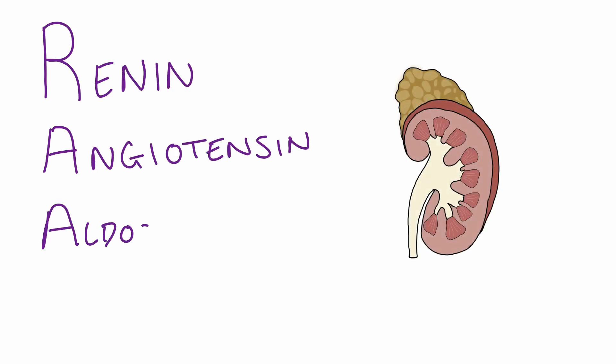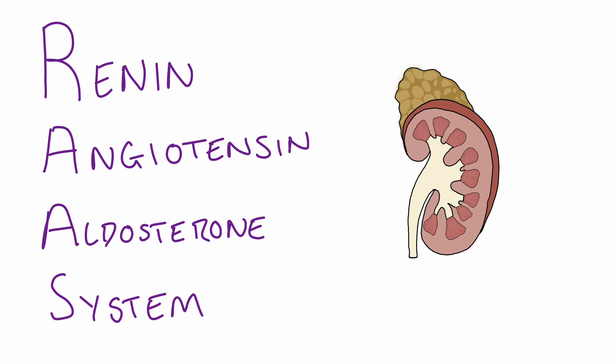Hi, in today's video we're going to be talking about the renin-angiotensin-aldosterone system. This is the system that provides hormonal control of blood pressure and it is mediated via the blood flow through the kidney. To understand this topic, you'll first need to know the anatomy of blood supply through the kidney and the main component of the kidney, which is called the nephron. If you'd like to learn more about this first, then please do watch my other video linked in the description.